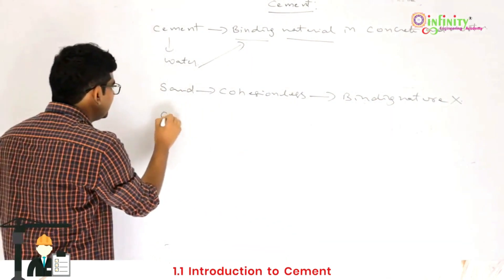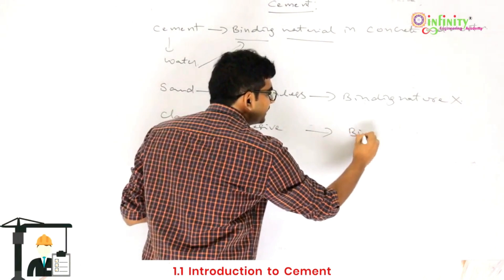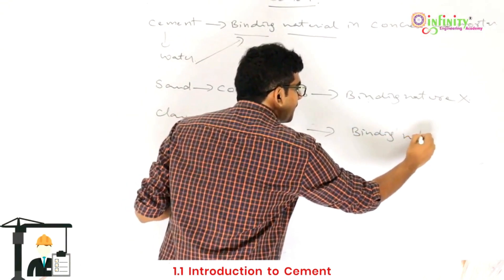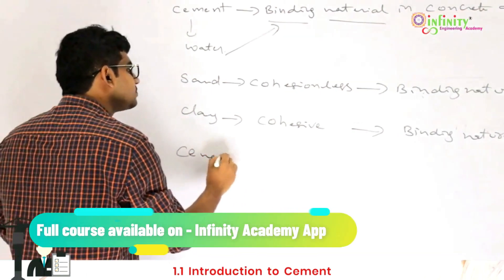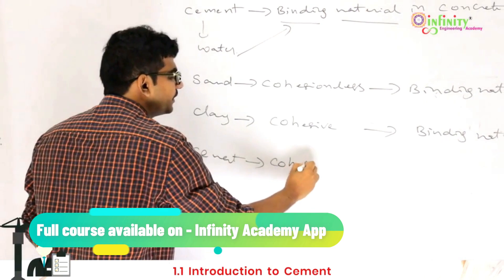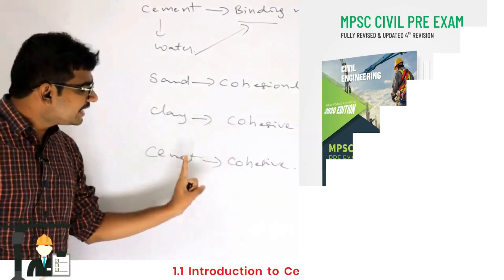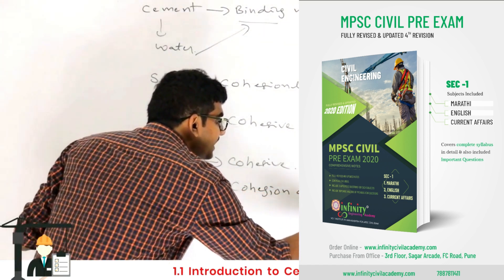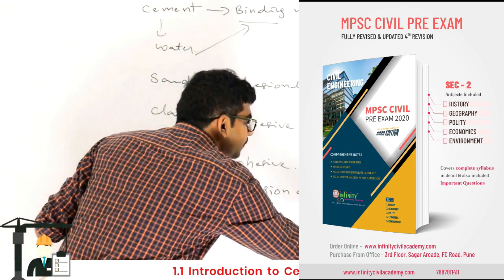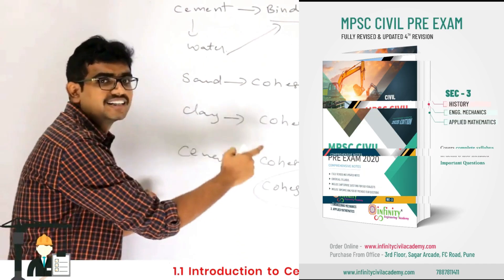Clay is a cohesive soil, so it exhibits the binding nature. Cement is also cohesive in nature — whatever cement particles are there, they are cohesive in nature, so cement will also exhibit the binding nature. The binding nature of cement is because of the cohesion and adhesion between the particles.